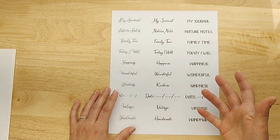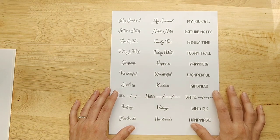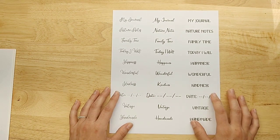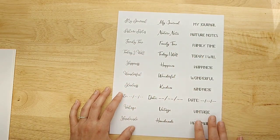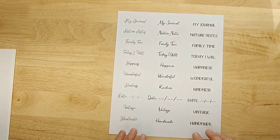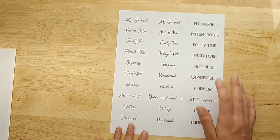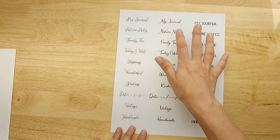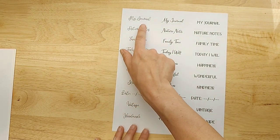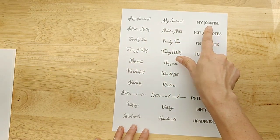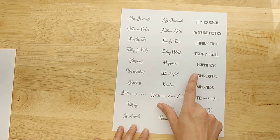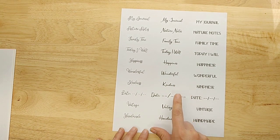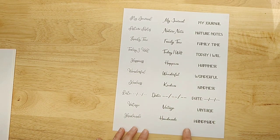But I just picked three. All you do, you click on it, you open it up, and your computer will say install. And then you can find it in your program. So I was using Photoshop. And I made a three-column paper here in three different fonts. So if you can imagine, 497 more. But I wrote my journal, nature's notes, family time, today I will, happiness, wonderful, kindness, date, vintage, and handmade.